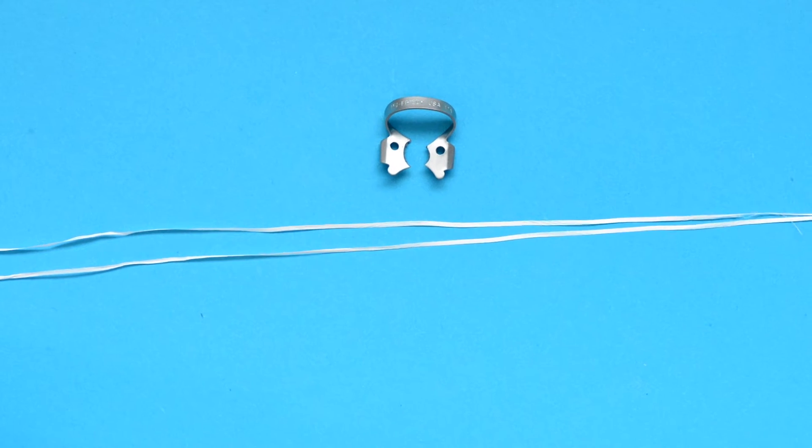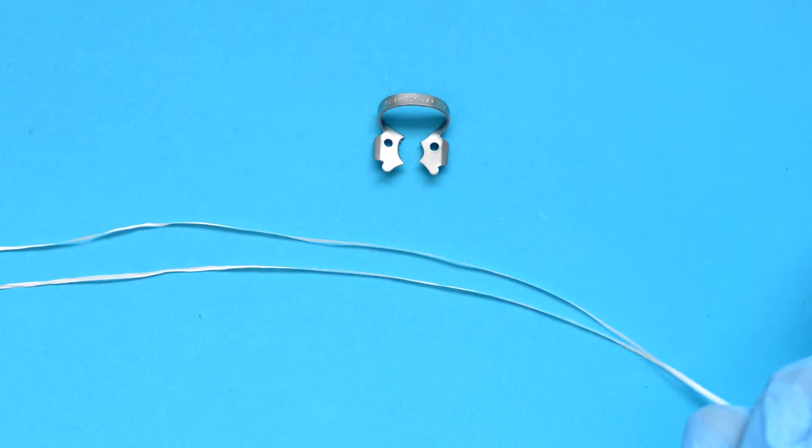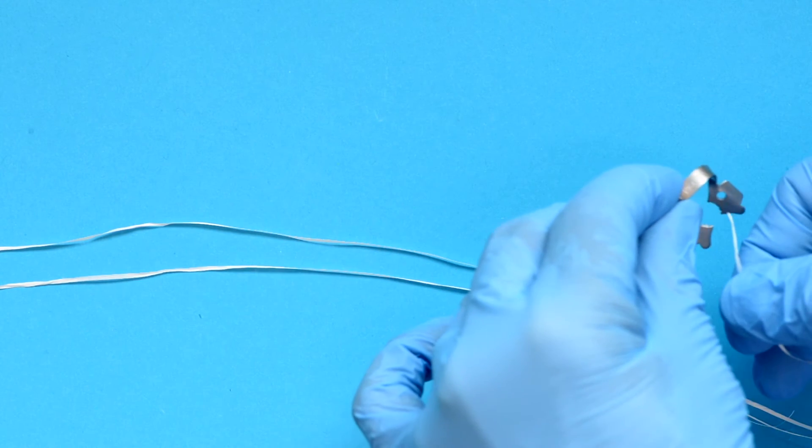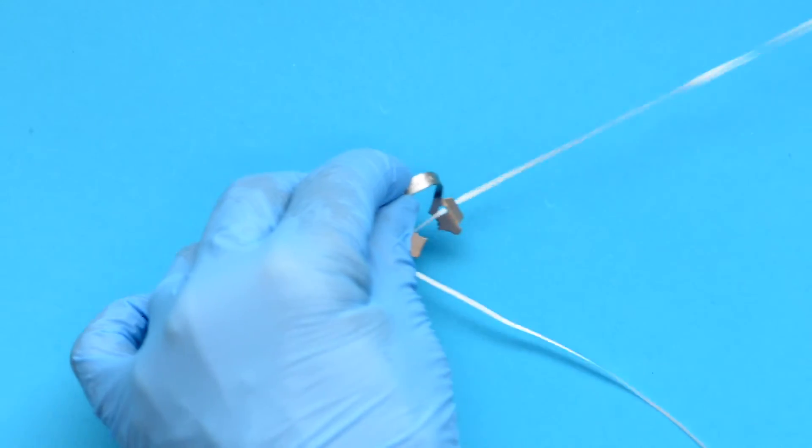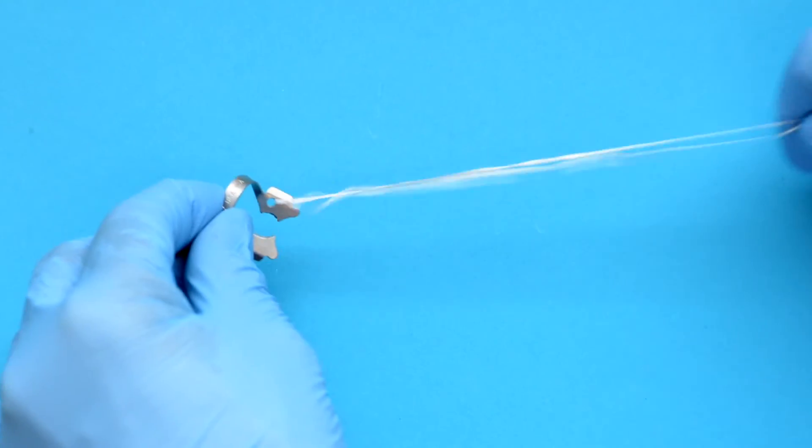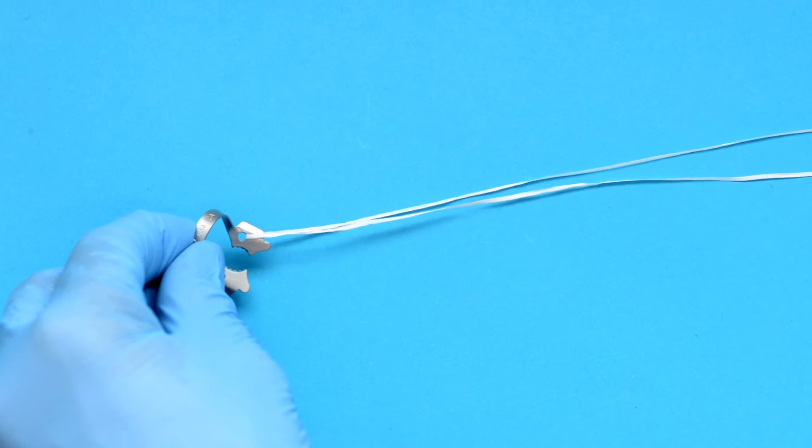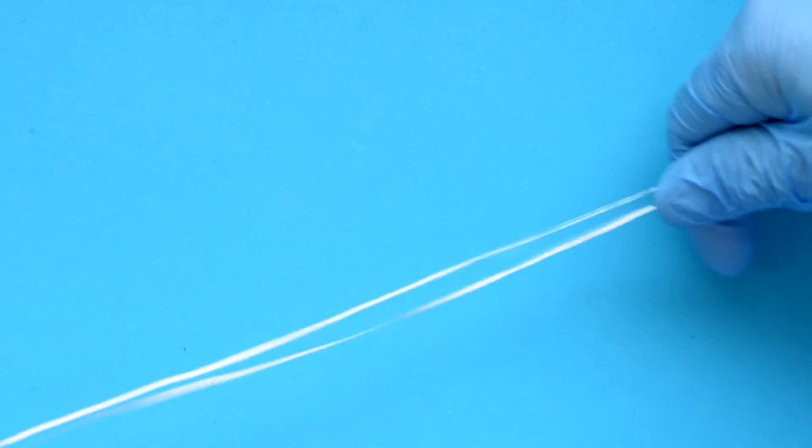What we do with this is I thread it through the lingual part of the clamp first and just double it up so you've got two equal bits on the other end.